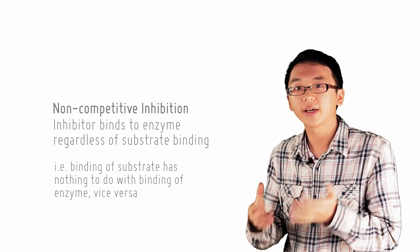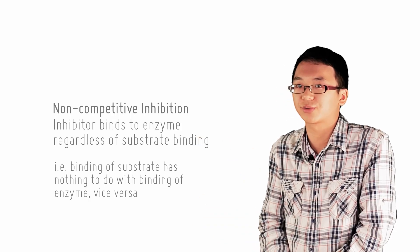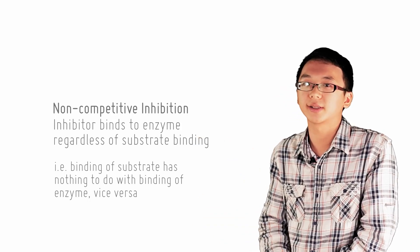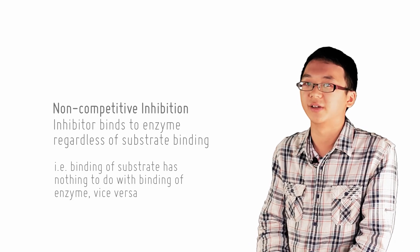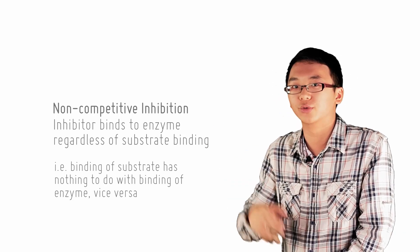And likewise, if the enzyme is already bound to the inhibitor, it will still bind equally well to substrate molecules. This is characteristic of non-competitive inhibition. How does the inhibition then occur if it loves to bind to the thing so much?